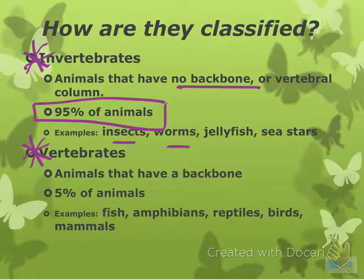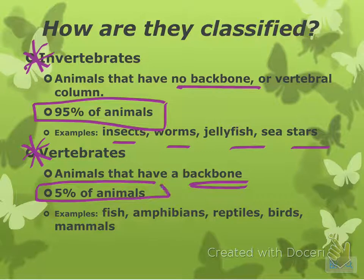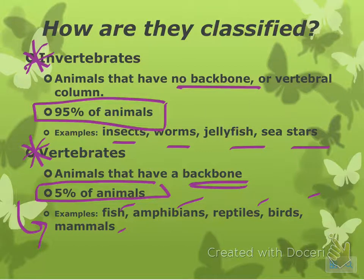Invertebrates are things like insects, worms, jellyfish, and sea stars. Vertebrates, on the other hand, are animals that have a backbone, and as you could guess, this is 5% of animals — fish, amphibians, reptiles, birds, mammals. Although typically when someone says 'an animal,' the first thing that comes to mind is usually one of the vertebrates, not the invertebrates. But remember, they are both animals.